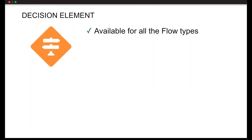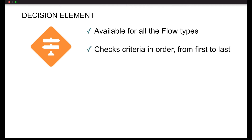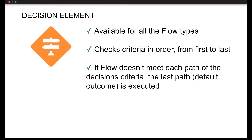First, it's available for all the different flow types. Next up is the criteria piece. When you set up your different criteria nodes, also known as outcomes, Salesforce will check that criteria in the order it's listed from first to last. This isn't all that different from if-formula logic if you're used to using that in your Salesforce formulas or even your spreadsheets.